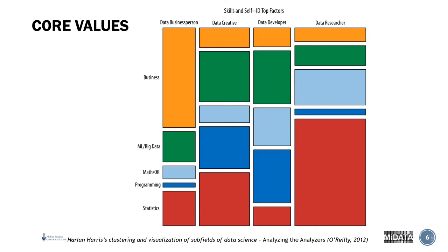Finally, you have the data business person, who usually comes with a bit more content expertise. They have a lot of business — that's the content expertise — very little programming, some statistics, because they need to appreciate numbers in terms of value for their business, and some math and some machine learning because they also need to understand the machine learning. This figure helps you understand who the data scientist is and what they'll contribute to your research program.